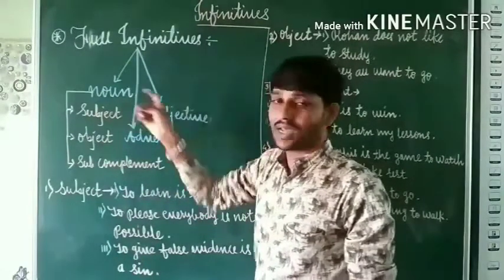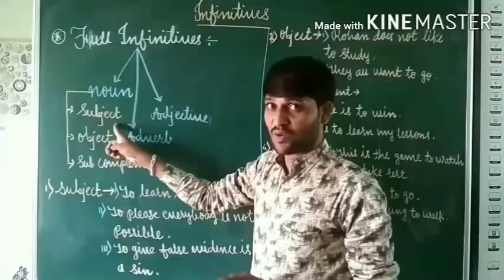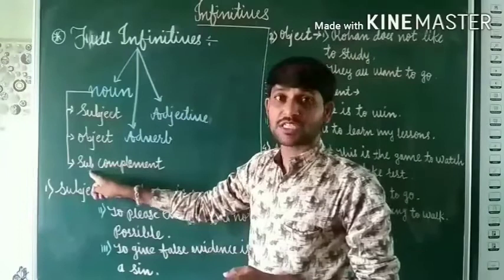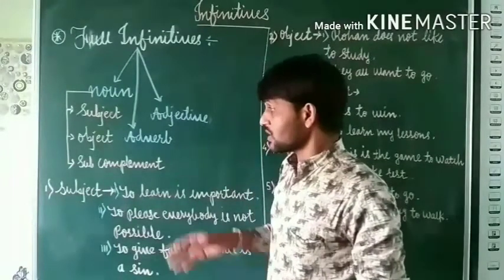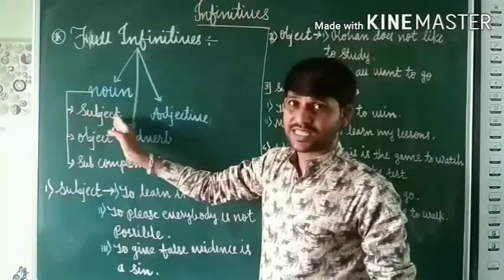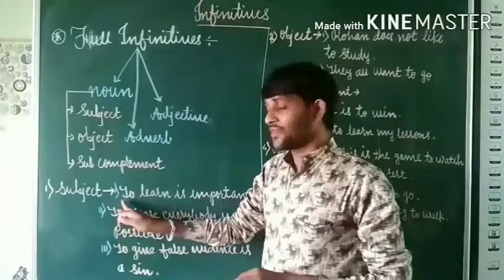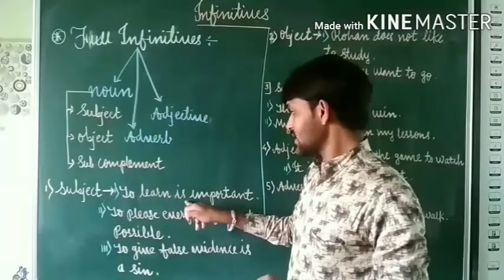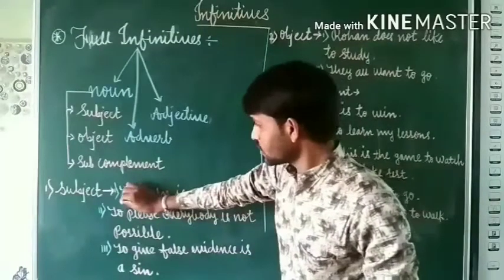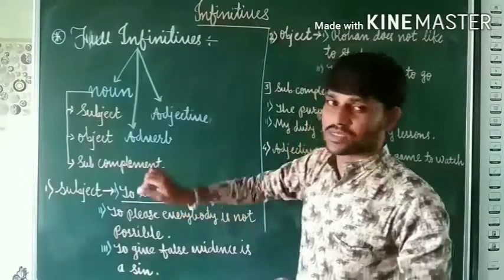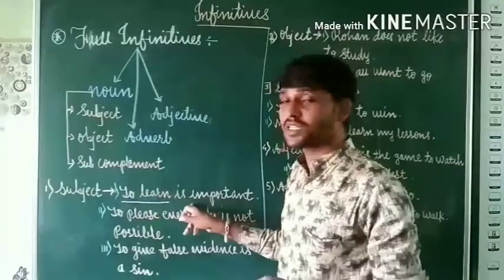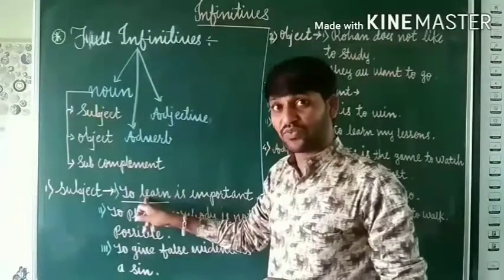When a full infinitive functions as a noun, it can be used as a subject in the sentence. For example: 'To learn is important.' Here, what is important? To learn. So 'to learn' is used as a subject in the sentence — that is a full infinitive. Second example: 'To please everybody is not possible.' What is not possible? To please. So 'to please' is used as a subject.